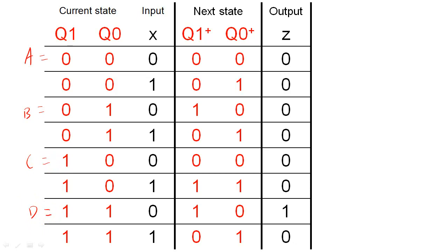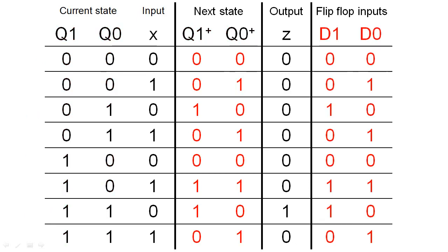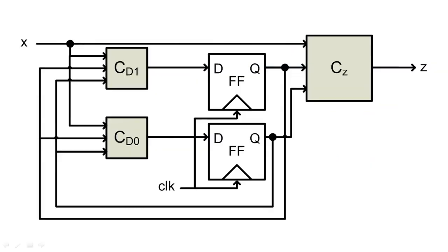Finally, we need to determine how to update the state of our flip-flops to execute the desired circuit. Because we are using D flip-flops, we want the inputs to the D flip-flops to match our desired next state. Now that we have a complete next state table, we see that we need to create 2 circuits to update the flip-flops, and 1 circuit to create the sequence recognizer's output.